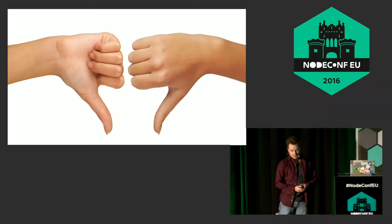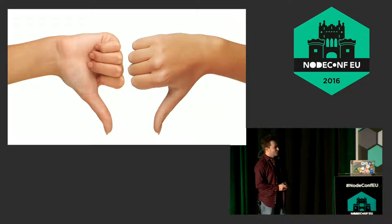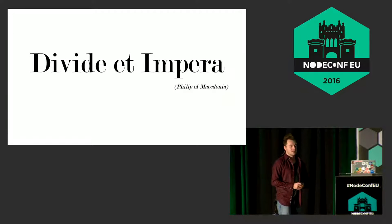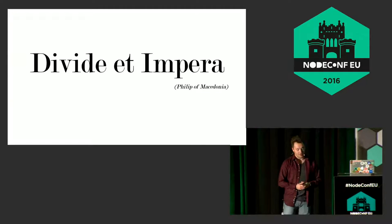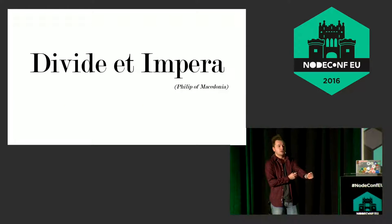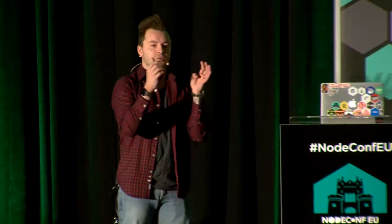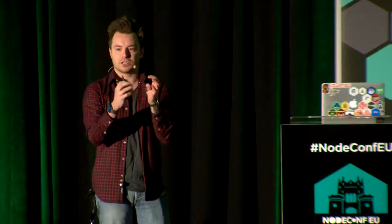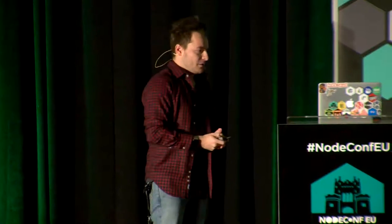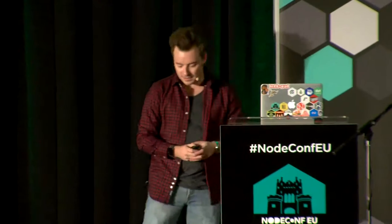Before studying engineering and nuclear physics, I studied at the gymnasium — Latin, history — and as you can hear from my accent, I'm Italian. Philip of Macedonia introduced this incredible concept in war strategy: divide and conquer — "divide et impera." It means that if you segregate and make things as simple as possible, you can conquer the world. And that's the story from the monolith: we move into a next phase that is microservices.